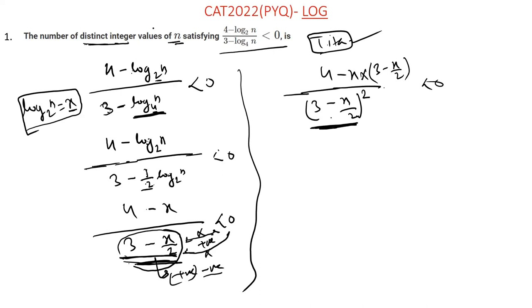Any term in square will always give positive value, negative can never come. So now we can cross multiply. We can do cross multiply. This is 0, so it becomes 0. We 4 minus x into 3 minus x by 2 less than 0. I hope this is clear to you. Let's solve this.